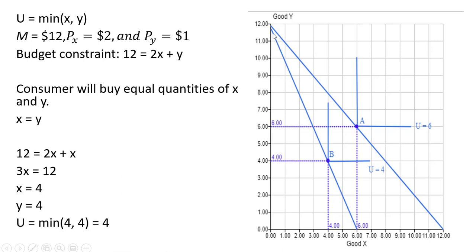We have our new budget constraint — it is steeper. The slope of the budget constraint is the price of good x over the price of good y. With the new budget constraint, the price of good x is 2 and the price of good y is 1, so the slope in absolute value is 2. The original budget constraint had a slope in absolute value of 1 over 1, which equals 1. Our new utility maximizing point will occur here when the price of good x rises to $2.